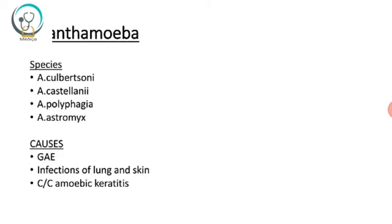The next organism is Acanthamoeba. There are four species: Acanthamoeba culbertsoni, Acanthamoeba castellani, Acanthamoeba polyphaga, and Acanthamoeba astronyxis. It causes three kinds of diseases: granulomatous amoebic encephalitis (GAE), infections of the lung and skin, and chronic amoebic keratitis.